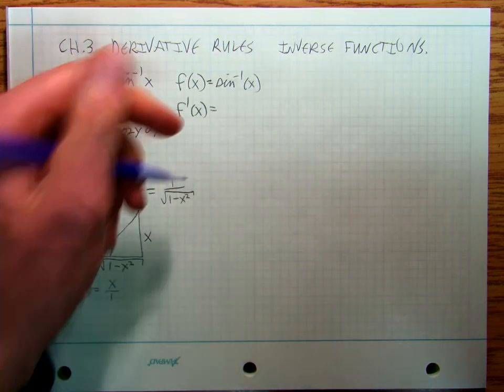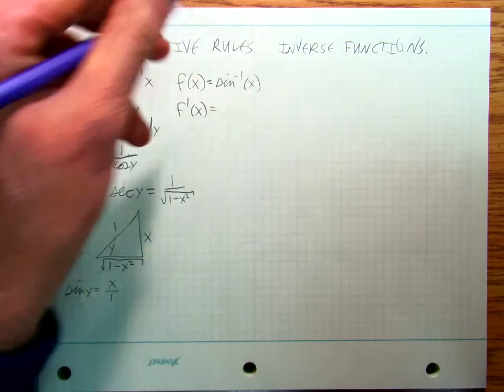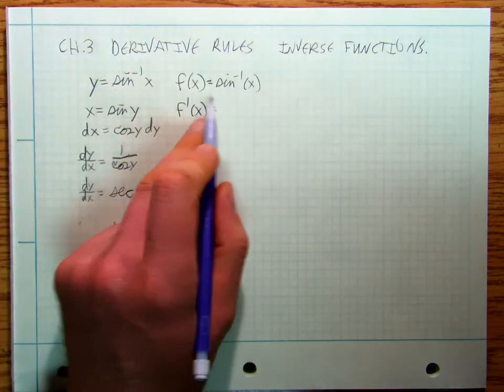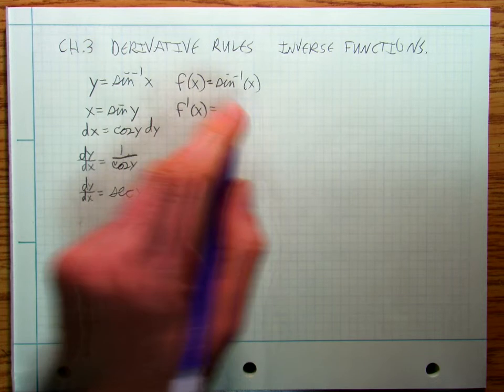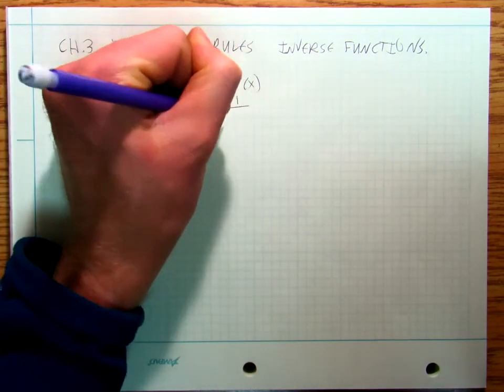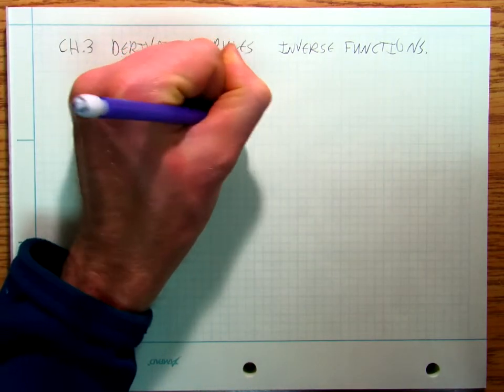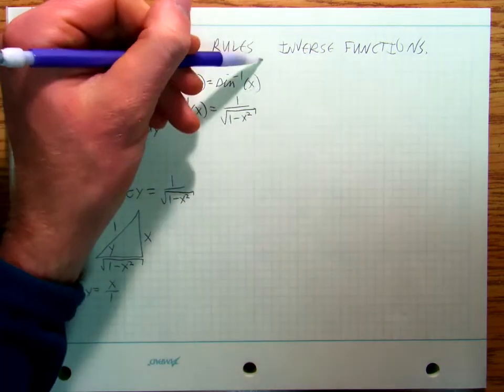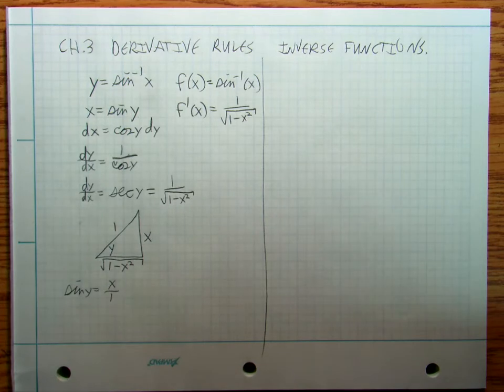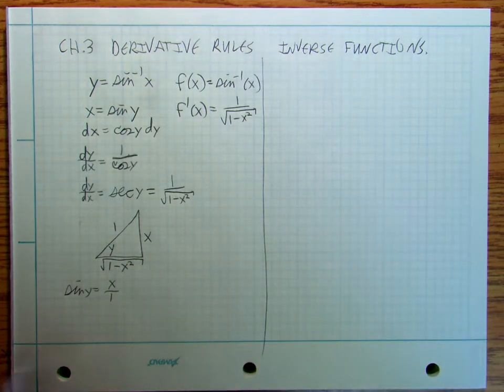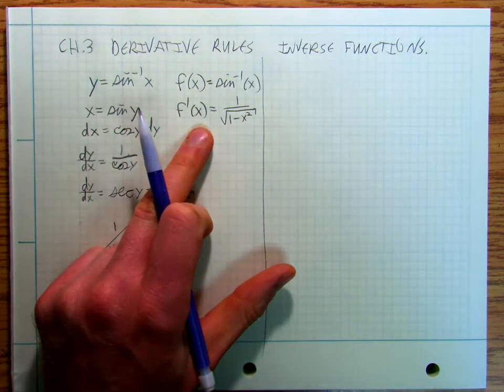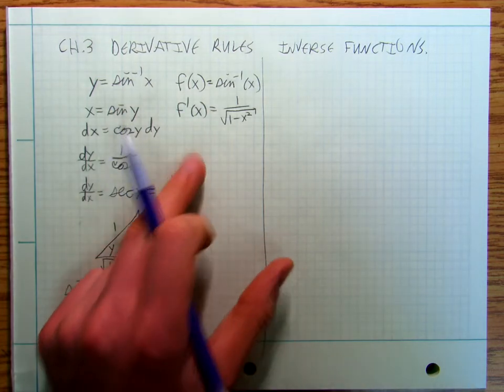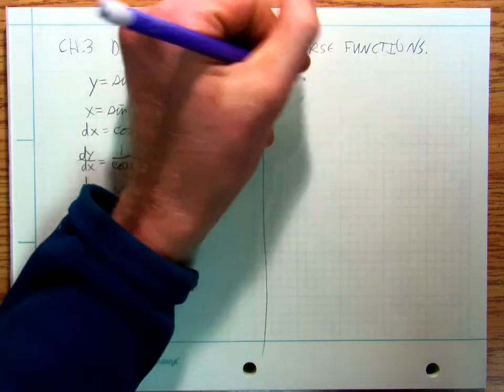So if f of x is sine inverse of x, then f prime of x is 1 over square root of 1 minus x squared. Okay, let's do another one. You can also do cosine inverse and tangent inverse like that. And I encourage you to.